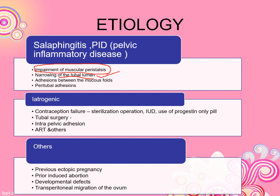The third cause is adhesions between the mucosal folds of the tube. If you have scar tissue, the fertilized egg can get trapped in the early stage. Peritubal adhesions are also a cause of ectopic pregnancy.